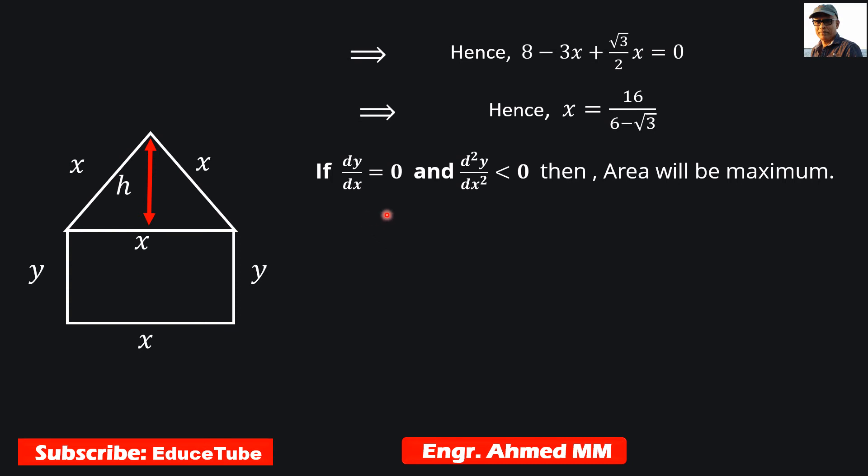But first we need to read this line. If dy/dx equals 0, we already used it. Putting 0, we already found the value for x. Now our task will be to find the second derivative to see if the result is coming less than 0 or not.